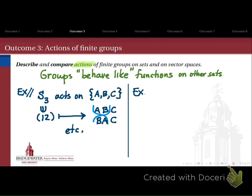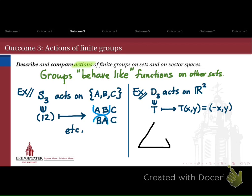We can also look at the actions of groups on vector spaces. For instance, D3, the dihedral group of the triangle, can act on the XY plane R2. Take an element of D3, say the transposition T, and associate it to the linear transformation on R2 that takes (x, y) and replaces it by (-x, y). This is how we usually envision the dihedral group acting — it's just taking the triangle and flipping it about the y-axis. So groups can behave like functions on sets or on vector spaces.